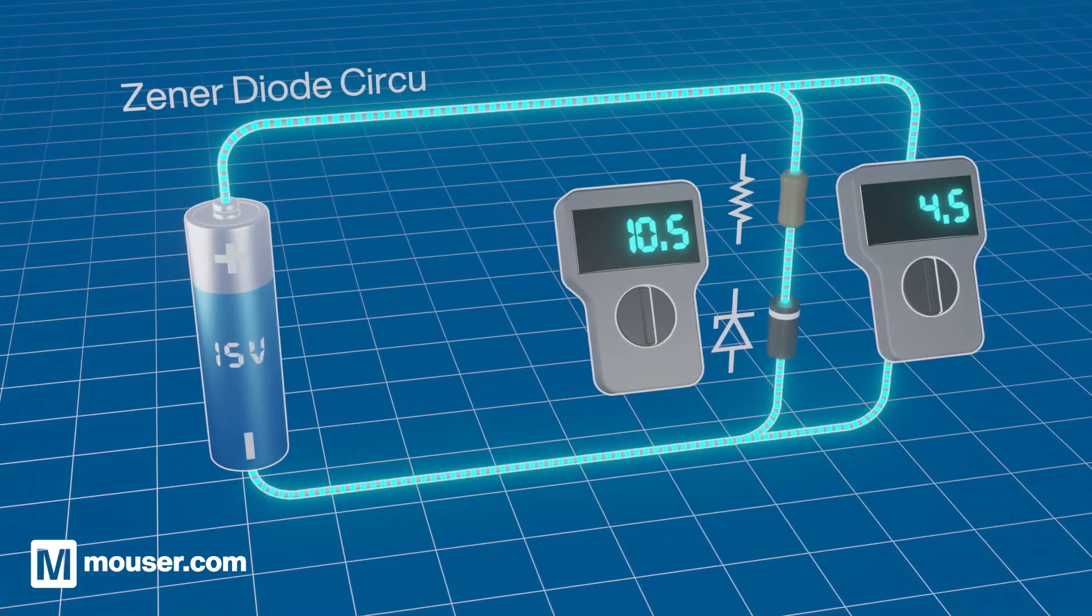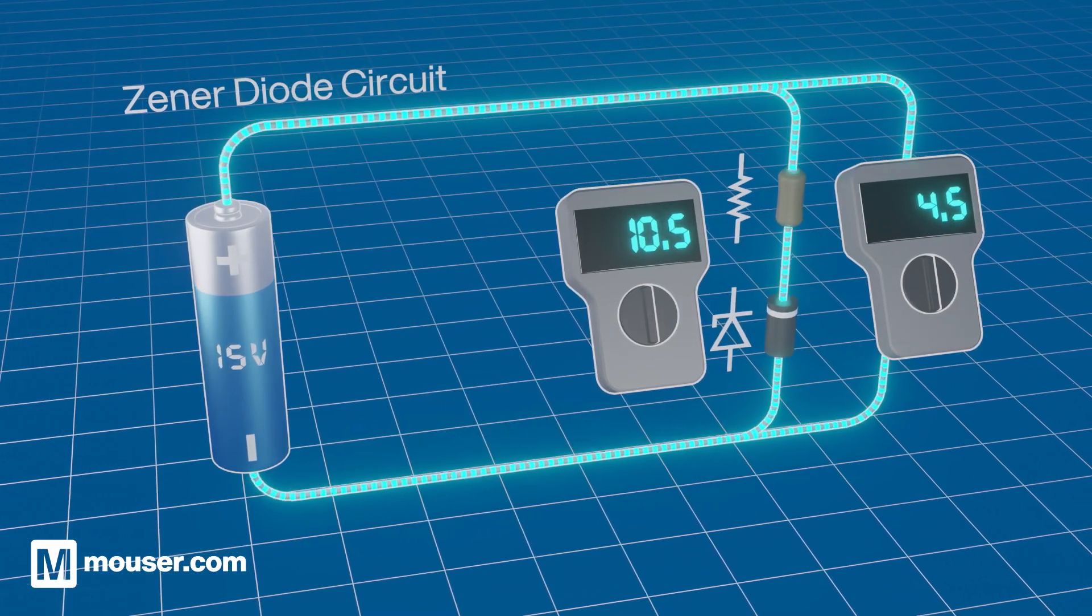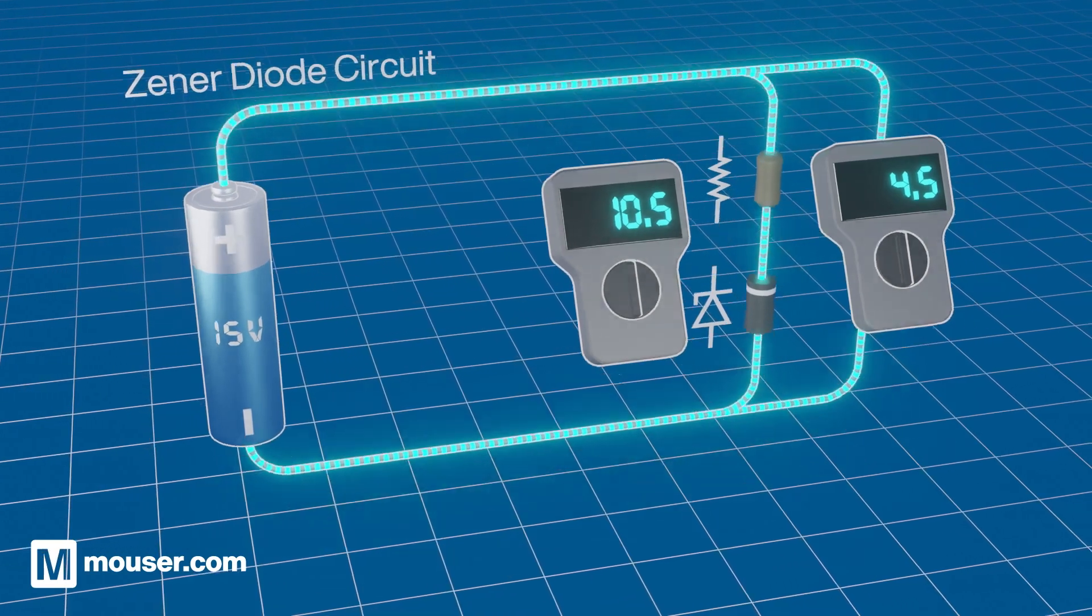Zener diodes are designed to break down safely at a known reverse voltage below the PIV, making them useful as voltage regulators or in voltage reference circuits.